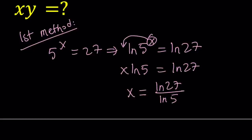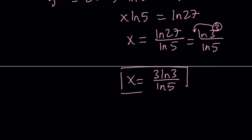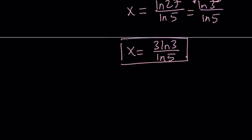Now we can definitely go ahead and simplify this since 27 is 3 to the third power. I can write this as ln 3 to the third divided by ln 5. And again one more time using the property. We can move the exponent and write this as 3 ln 3 divided by ln 5. So that is my expression or value for x. Let's go ahead and do the same thing for y and then we're going to put it together.